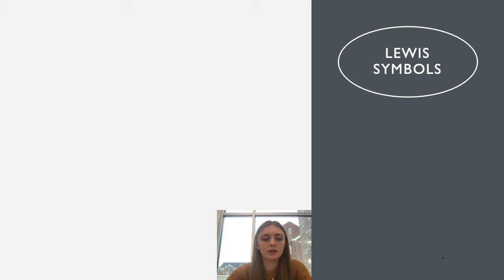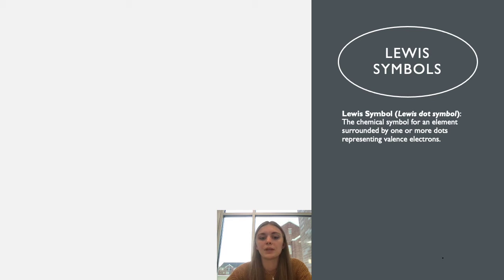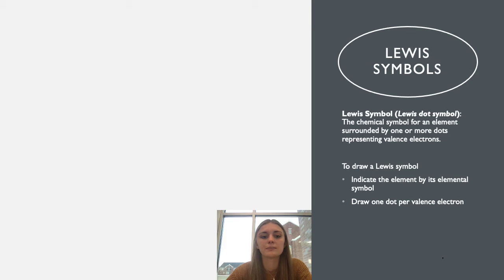Now we're going to get into how we can start to draw these Lewis structures, beginning with just a Lewis symbol, also called a Lewis dot symbol. A Lewis symbol is the chemical symbol for an element surrounded by one or more dots, each representing its valence electrons.